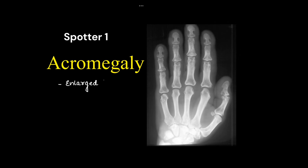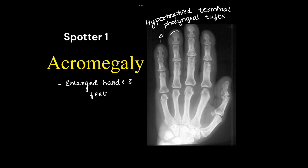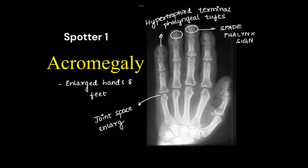This was a hand X-ray of an acromegaly patient. We can see enlarged hands and feet. There are hypertrophied terminal phalanges, which is pathognomonic — they are also known as the spade phalanx sign. Joint space may or may not be enlarged in these cases, and note the increase in soft tissue thickness, which is also present in the feet.